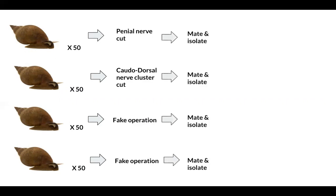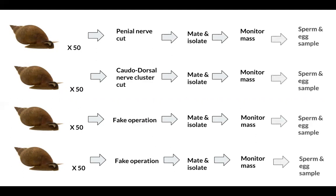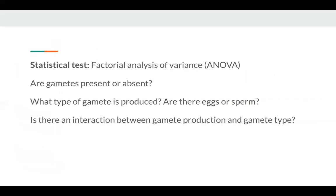Samples of eggs and sperm from each treatment will be taken to confirm the presence and type of gamete produced. The results will be analyzed using a factorial analysis of variance.